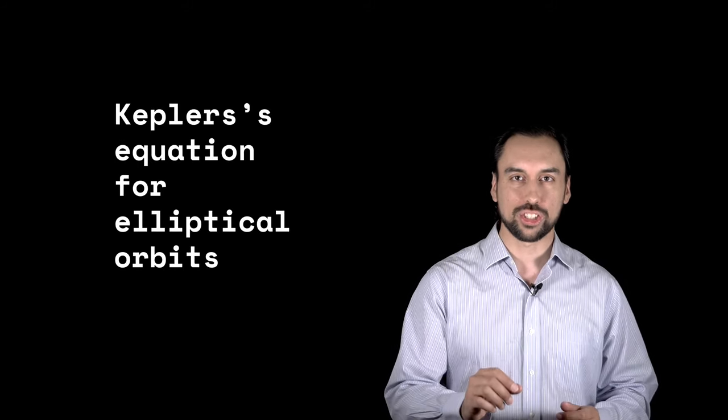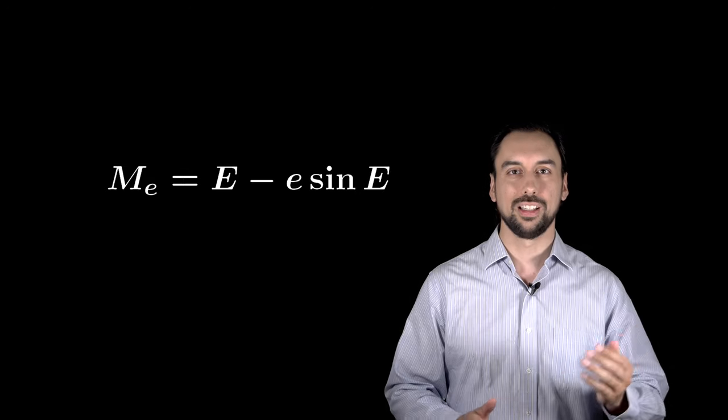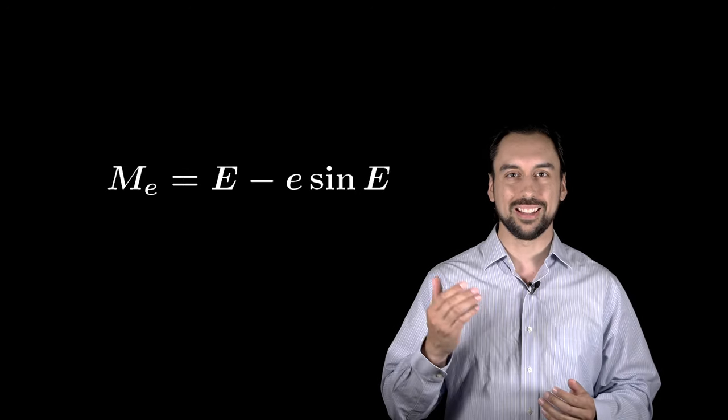Hi. In this video, we are going to talk about Kepler's equation for elliptical orbits. Kepler's equation for elliptical orbits is a relationship between the mean anomaly, the eccentric anomaly, and the eccentricity.